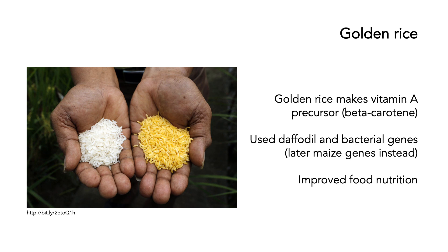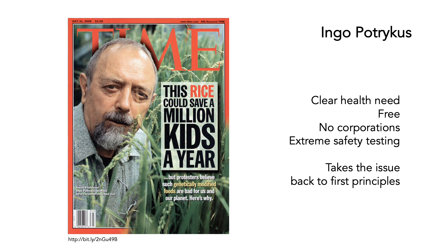Against this backdrop has been the development of something called golden rice. Golden rice makes a vitamin A precursor called beta-carotene. Originally it used genes from daffodils and bacteria, but later used genes from maize or corn. The whole point of this is to improve food nutrition, so people who eat golden rice get a good amount of vitamin A in their diet.